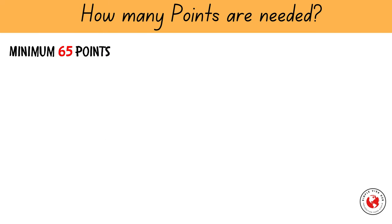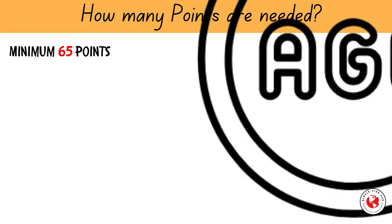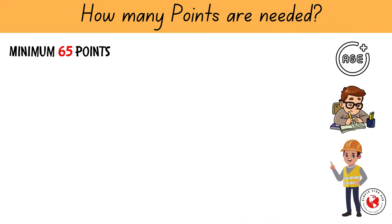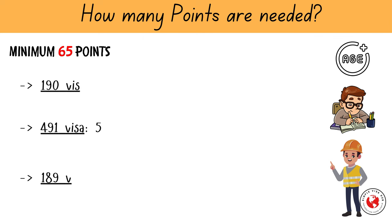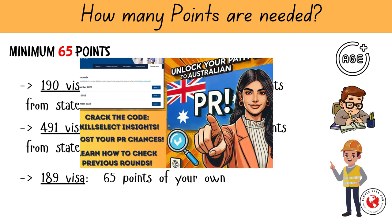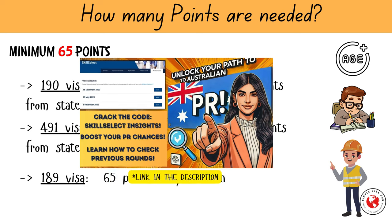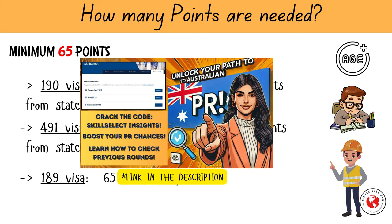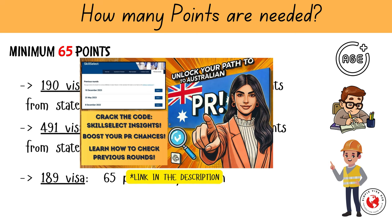You must score at least 65 points on the points test, but there are more factors such as age, studying, or having a certain amount of experience. For state-nominated visas 190 and 491, you can get additional points from the state towards your application. To check data on previous invitation rounds for your specific occupation, you can refer to my video on how to check previous skillset invitation rounds for Australia, which gives valuable insight into the points required and number of invitations issued. I'll drop the link in the description box below.